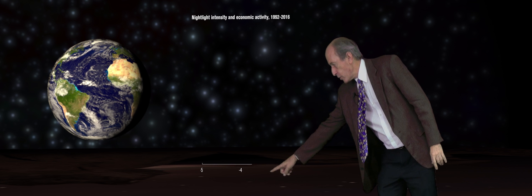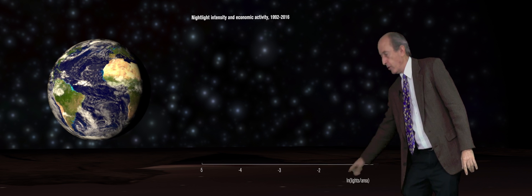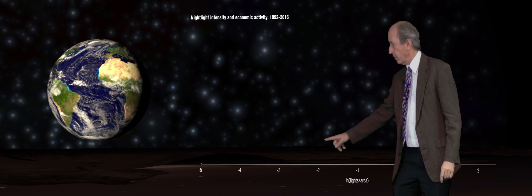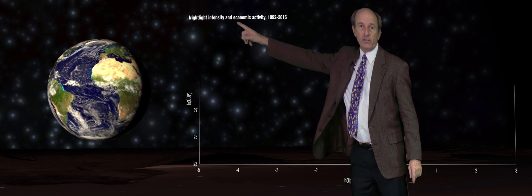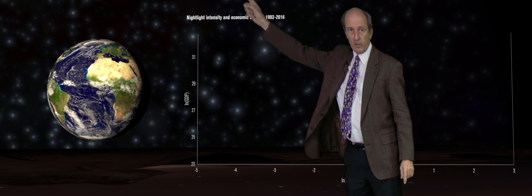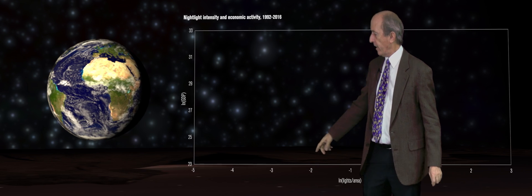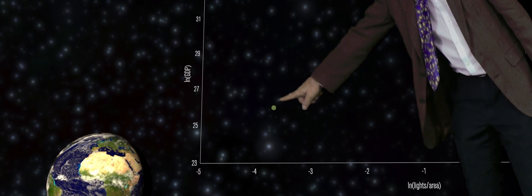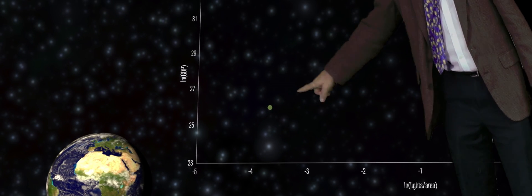Here, we measure the intensity of nightlight. The more to the right, the brighter. And here, the level of economic activity. The more we go up, the more economic activity there is. This point is Afghanistan in 1992.